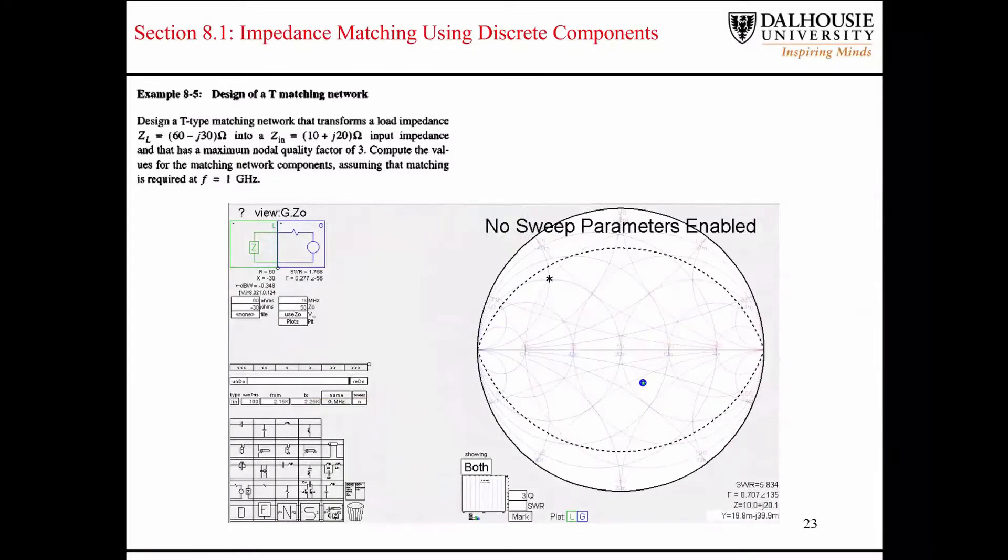Now we're going to look at example 8.5 from the book, where we're asked to design a T-matching network where we want to transform an impedance of 60 minus J30 ohms to an impedance of 10 plus J20 ohms. We haven't discussed nodal quality factor yet.